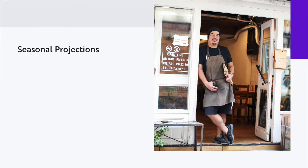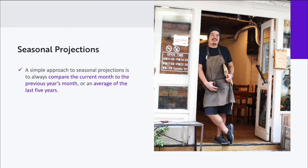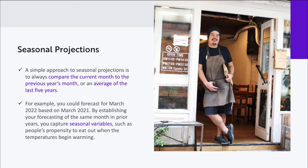The next technique is seasonal projections. If you're like most restaurants, your monthly sales will display strong seasonality — meaning sales vary significantly based on the time of year and weather. To achieve accurate sales forecasting, take into account data from a similar period in the past. A simple approach is to always compare the current month to the previous year's month, or an average of the last five years. For example, you could forecast for March 2022 based on March 2021, capturing seasonal variables such as people's propensity to eat out when temperatures begin warming.